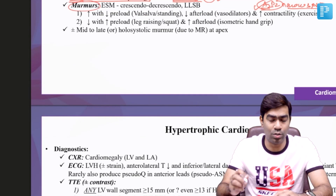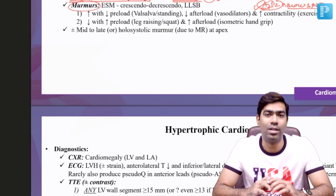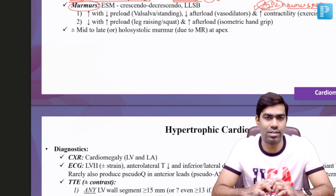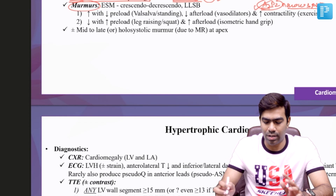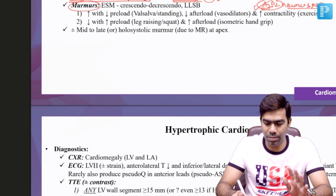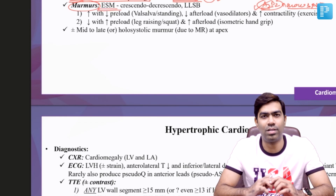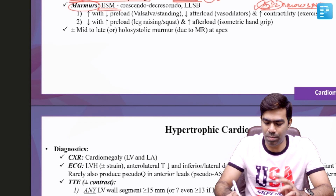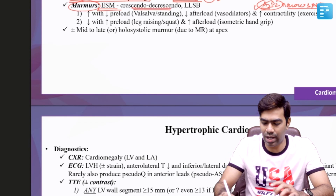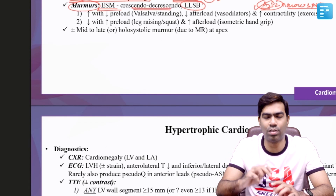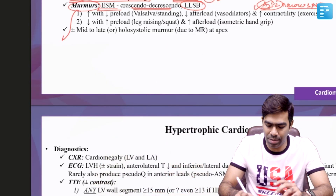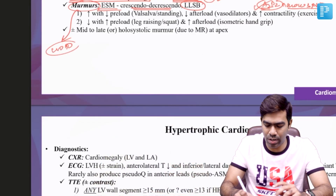Coming to murmurs — one of the classic areas tested in exams. The murmur of obstructive HCM is typically an ejection systolic murmur of crescendo-decrescendo type. The maximum intensity of the murmur is at the left lower sternal border. Remember, the aortic stenosis murmur is best heard at the right upper sternal border, but the HCM murmur is best heard at the left lower sternal border.